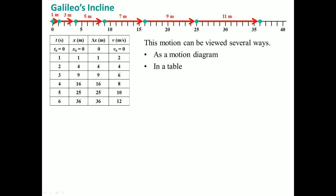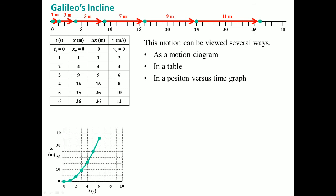We can see those values given in a table and in the position versus time graph. At the first second it is at one; at two seconds it is at four — one plus three equals four. At three seconds it is at nine; at four seconds it adds seven more, becoming 16. Notice the position is changing in a way that behaves almost like an x-squared value.